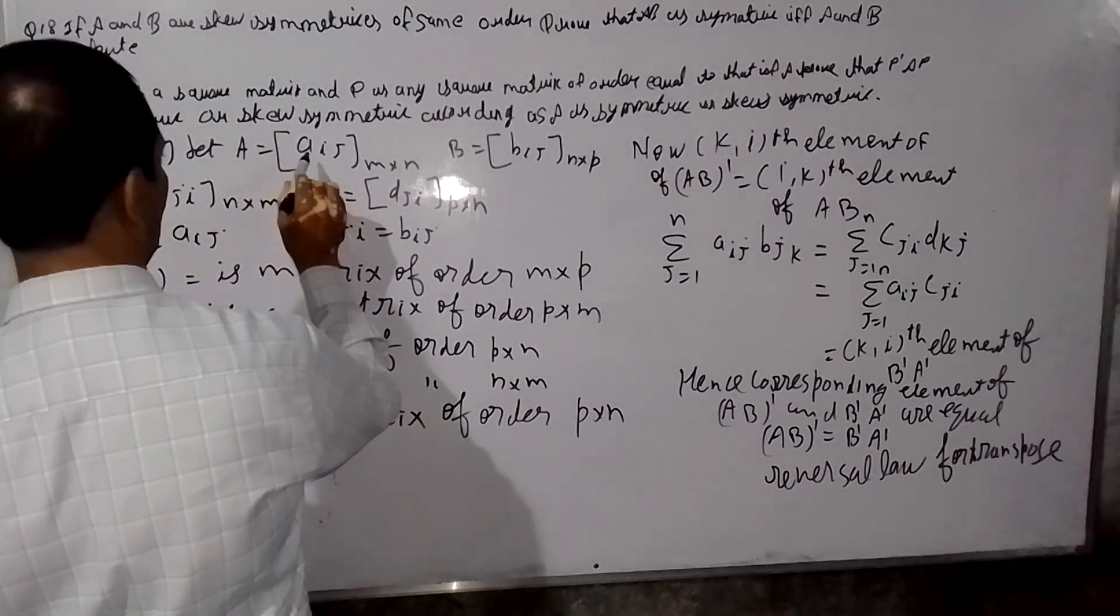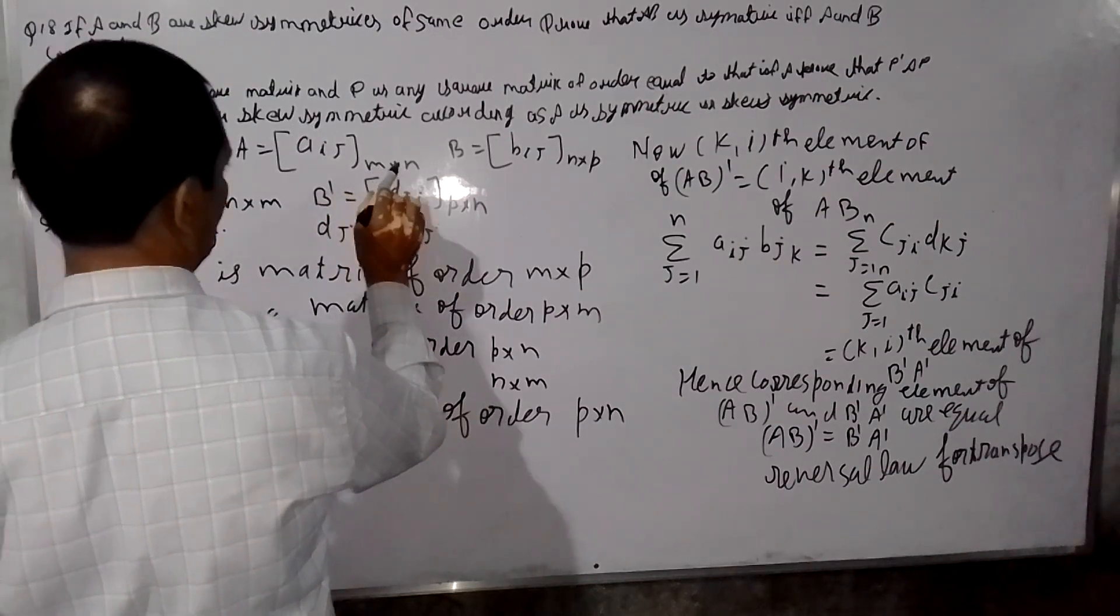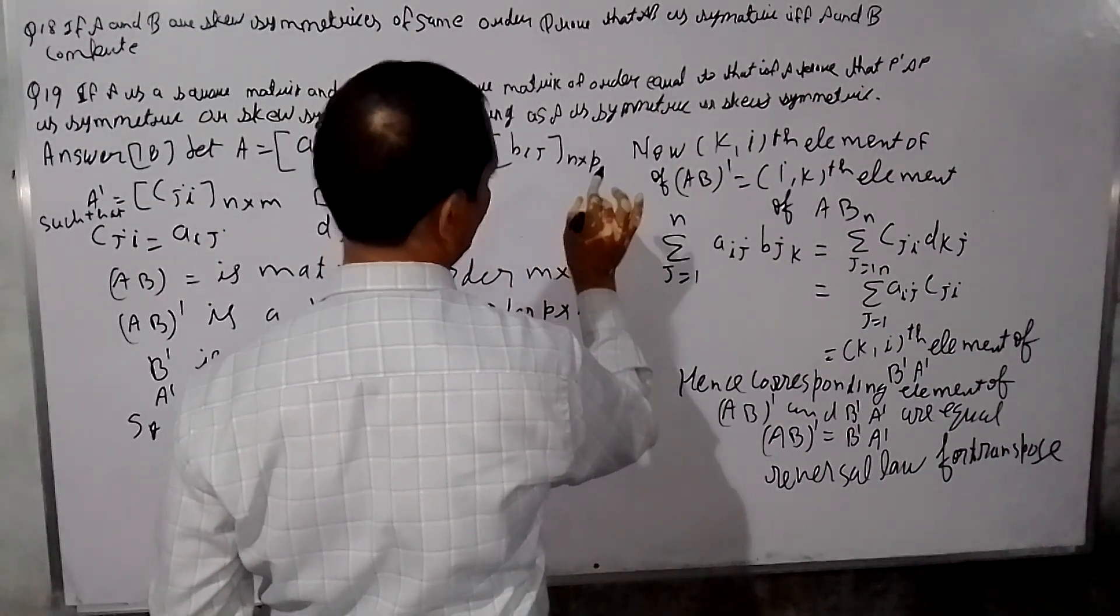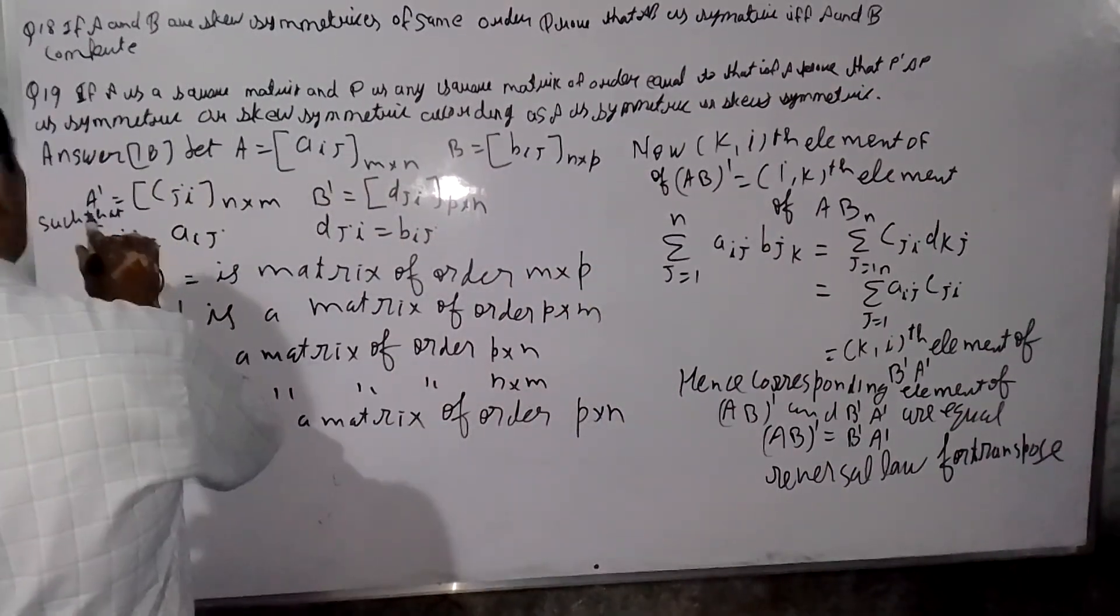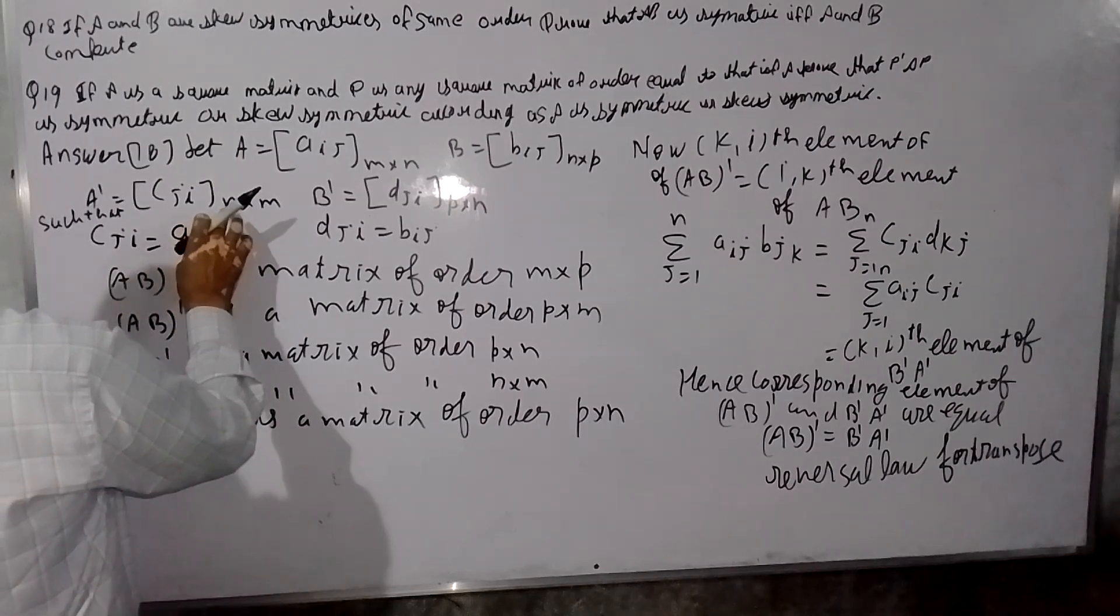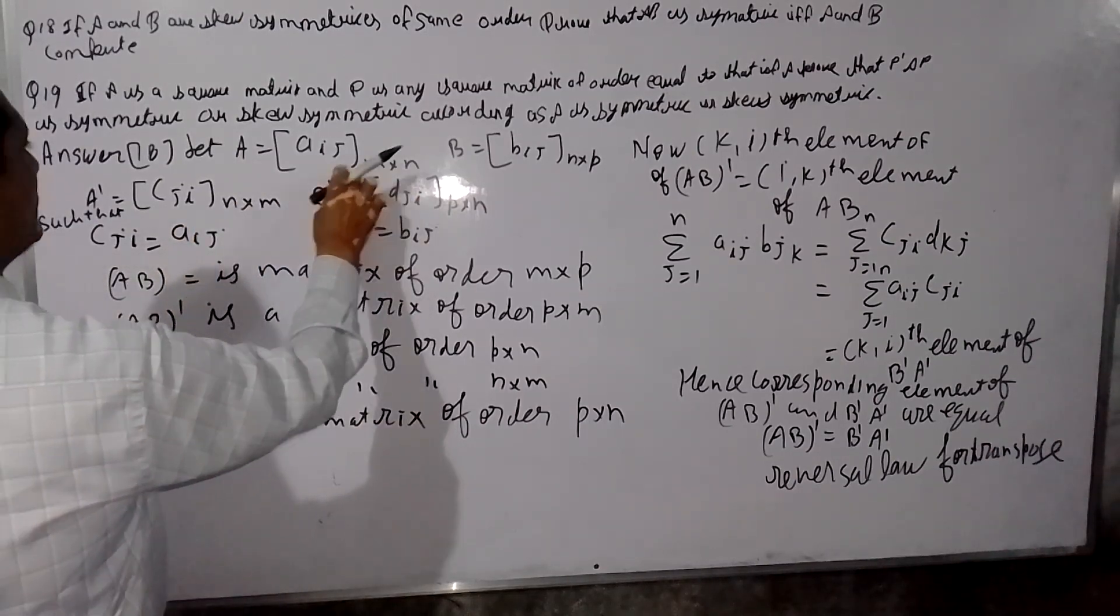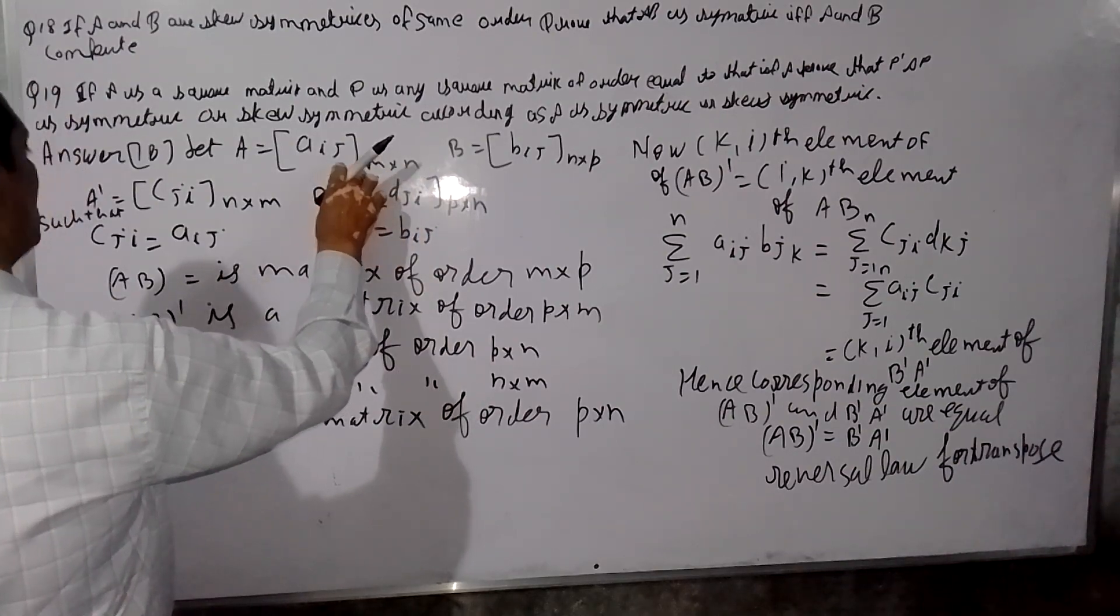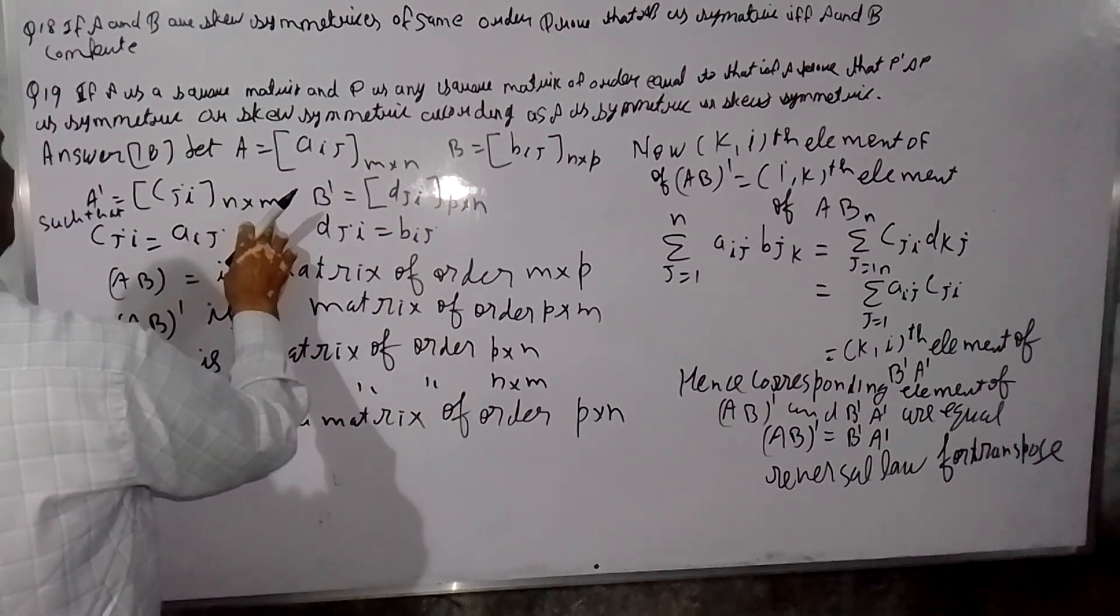So matrix A is equal to aij having an m by n, and matrix B is equal to bij having an m by n. A transpose is equal to cij and after this matrix will become n by m. This matrix A is equal to bij having an m by n. If that means of this matrix A is equal to the matrix BC.